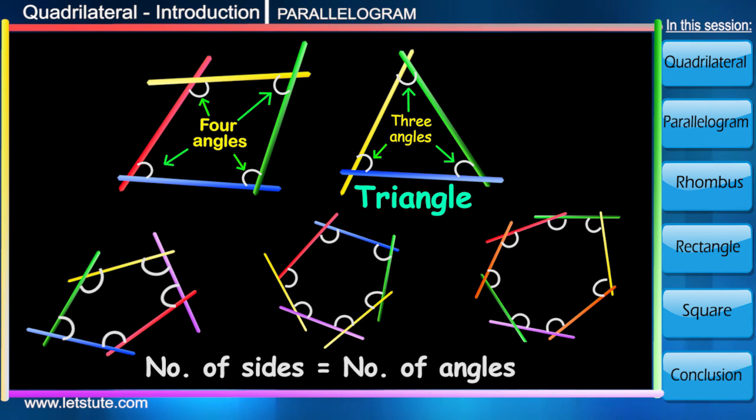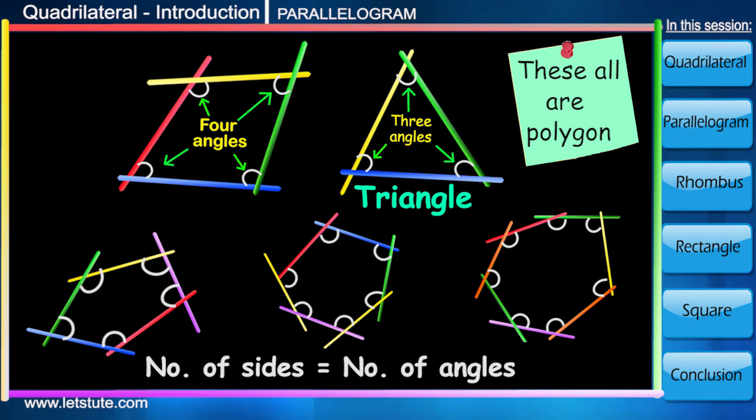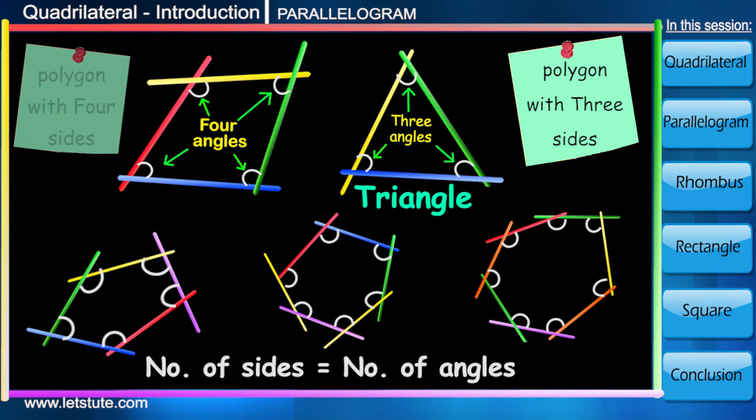Basically, a closed figure starts from three sides. Therefore, in general, a closed figure with three or more than three sides is called a polygon, where 'poly' means many and 'gon' means angle.